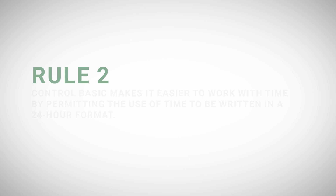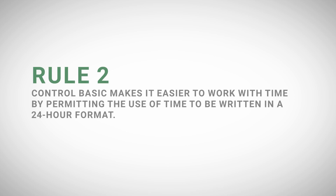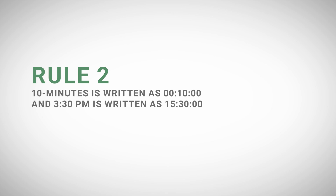Rule two: Control Basic makes it easier to work with time by permitting the use of time to be written in a 24-hour format. In this format, 10 minutes is written as 0 hours, 10 minutes, and 0 seconds, and 3:30 p.m. is written as 15 hours, 30 minutes, and 0 seconds.